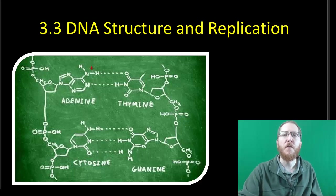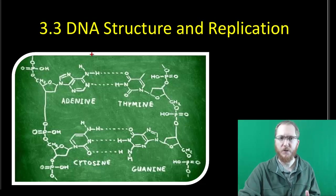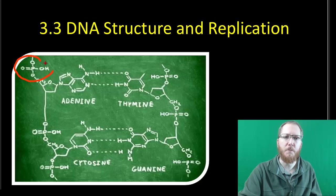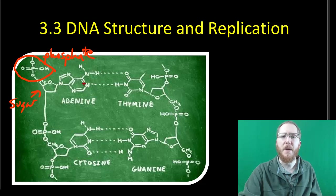For starters, I want to go over the fact that DNA is made up of a bunch of monomers called nucleotides, and each nucleotide is going to contain a phosphate group, a 5-carbon sugar, and a nitrogen base. The nitrogen base is going to be either adenine, thymine, guanine, or cytosine. There's four types.